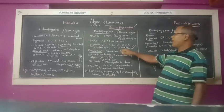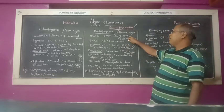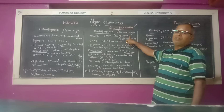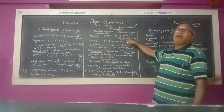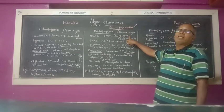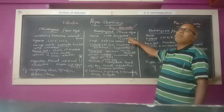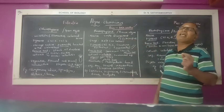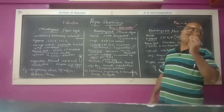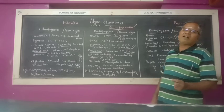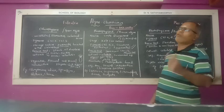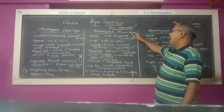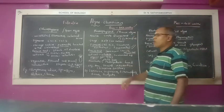Phaeophyceae is mostly marine, simple filamentous. The plant body ranges from simple filamentous forms to large parenchymatous forms. It is also like Ectocarpus in structure.